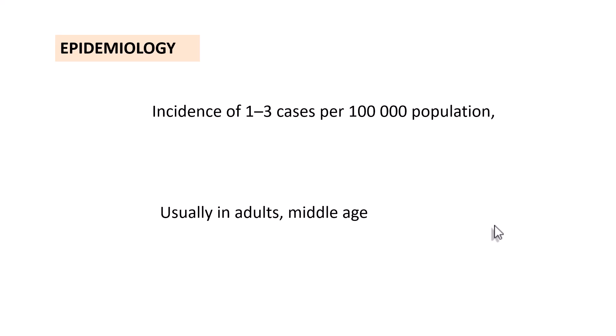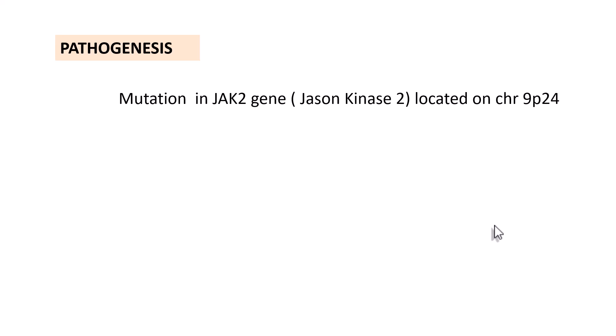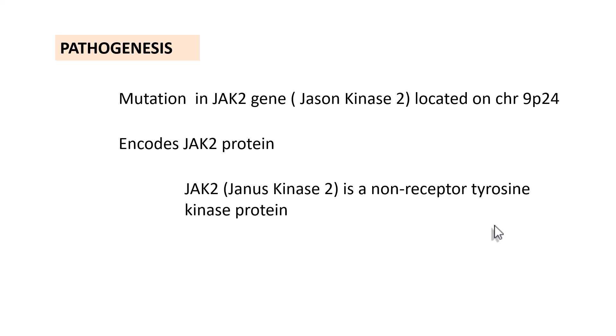Moving on to the epidemiology, the incidence of polycythemia vera is more or less similar to that of chronic myeloid leukemia — around 1 to 3 cases per lakh population, usually in adults or middle-aged individuals. The main pathogenesis is because of mutation in the JAK2 gene. JAK stands for Janus kinase and this gene is located on chromosome number 9, which encodes a protein called JAK2. This JAK2 is a non-receptor tyrosine kinase protein — in contrast to chronic myeloid leukemia where we talked about a receptor tyrosine kinase.